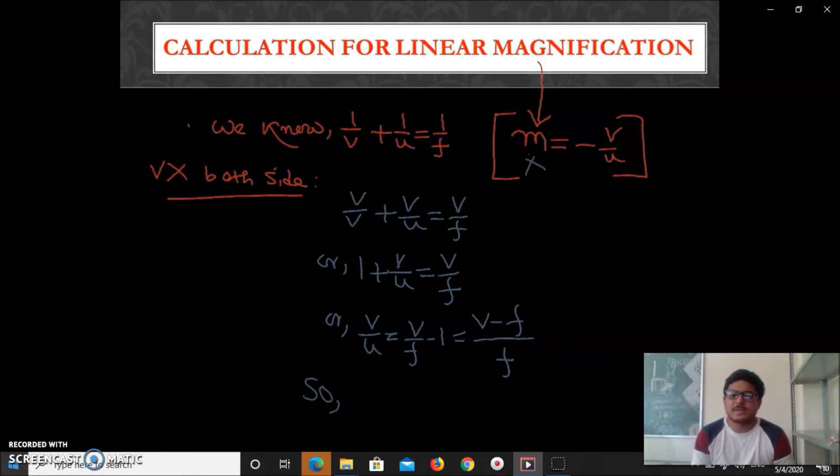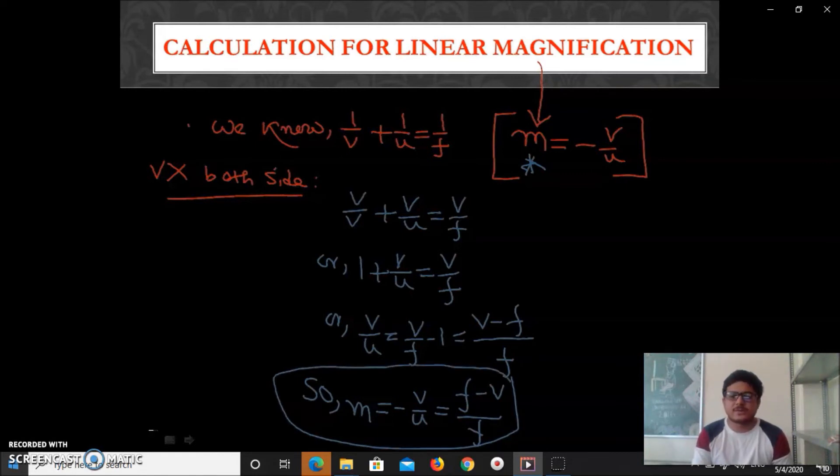Now magnification is given by m = -v/u. So let's put the value. Now it will come (f - v)/f. So this is the expression for linear magnification. In numerical problems we have to use this formula.